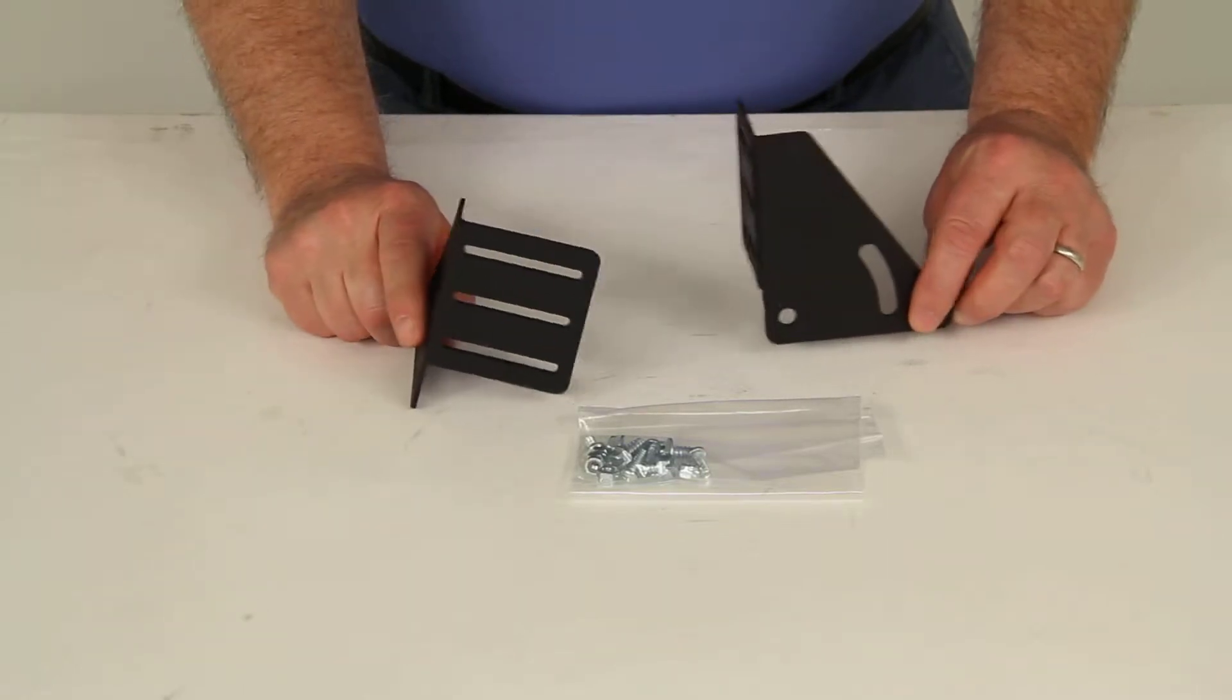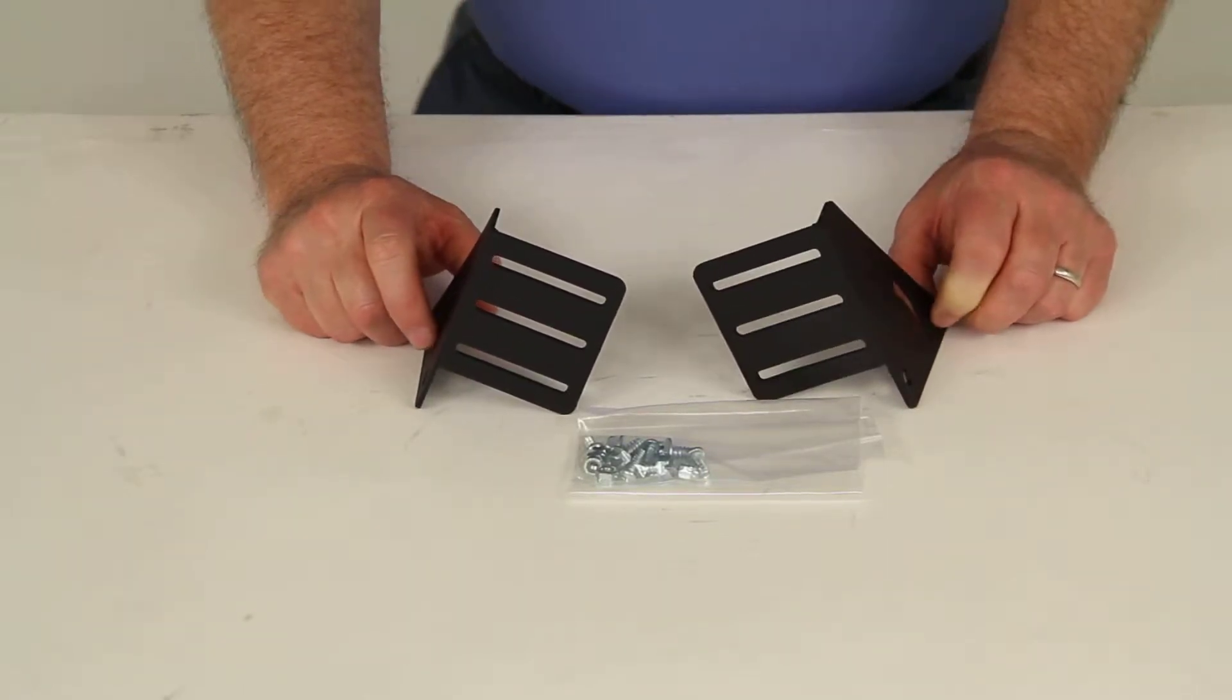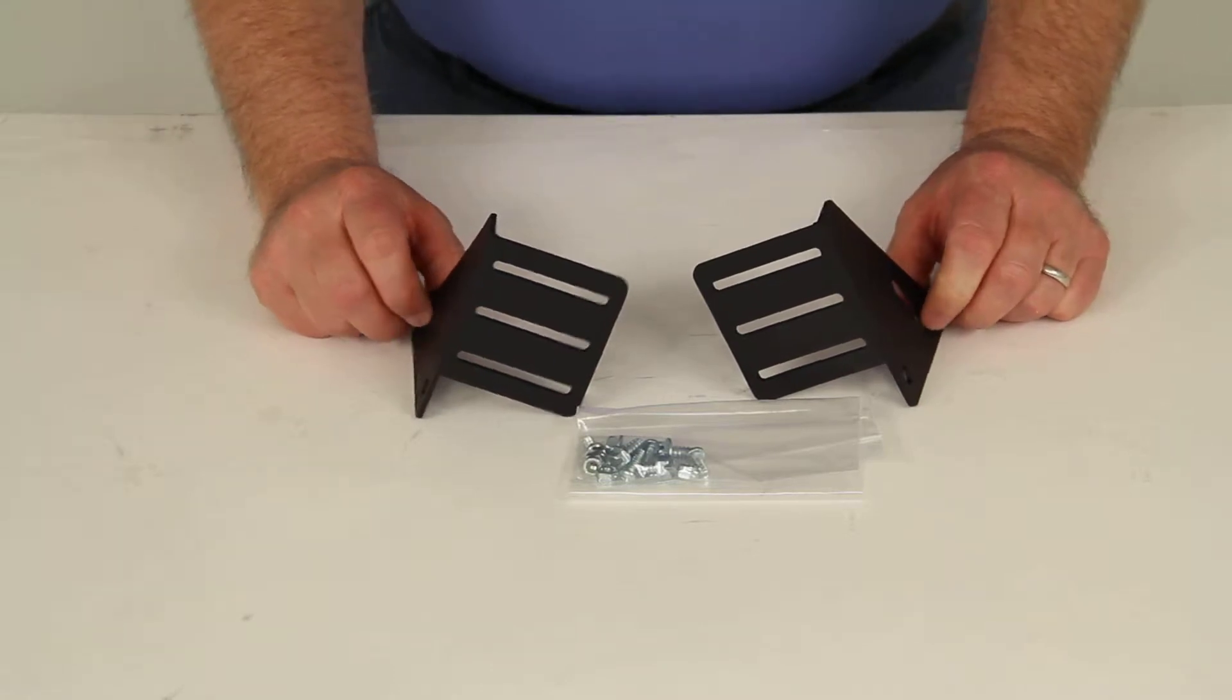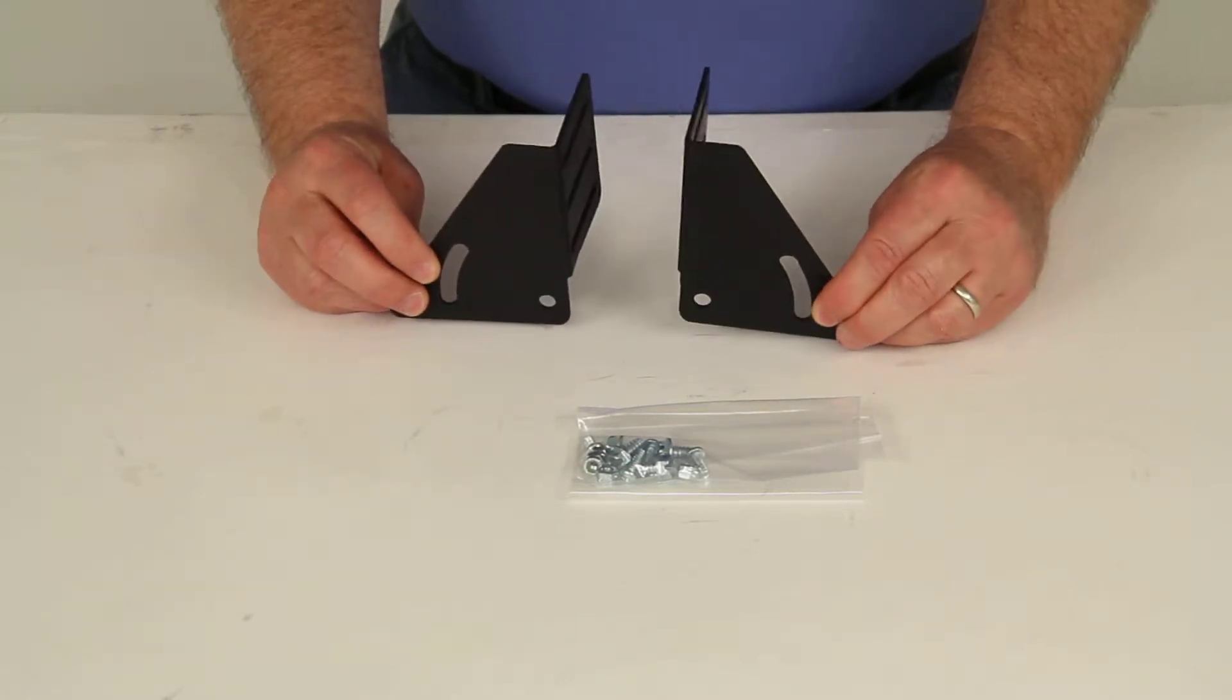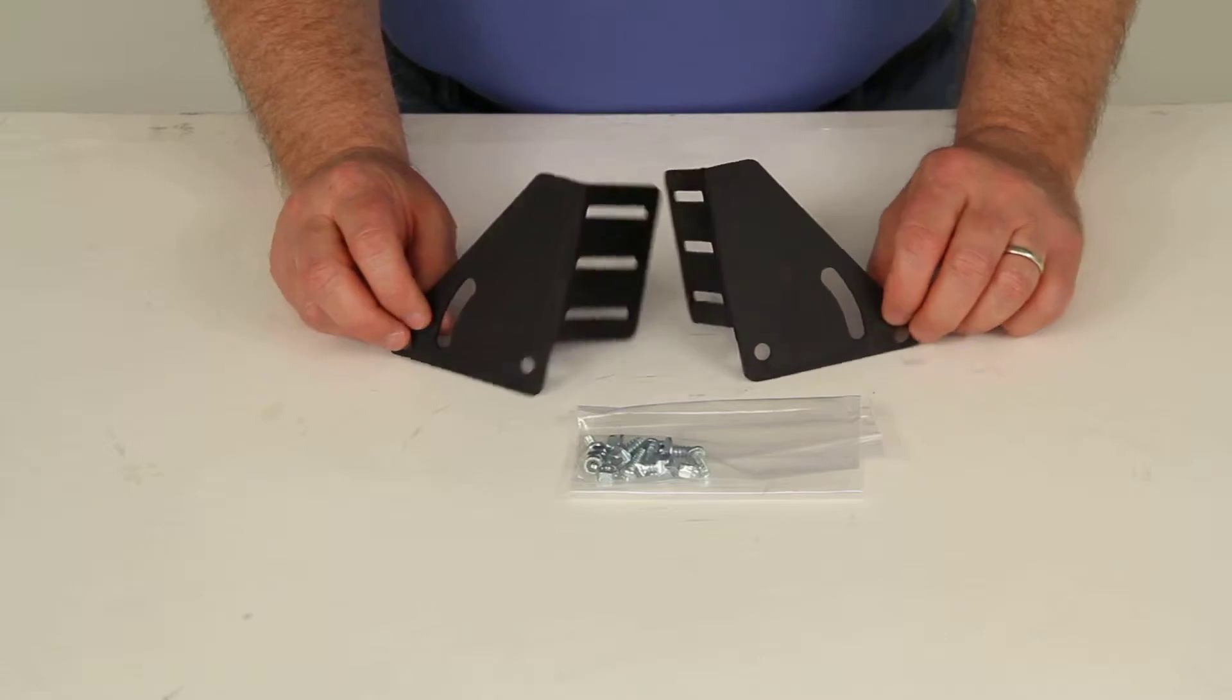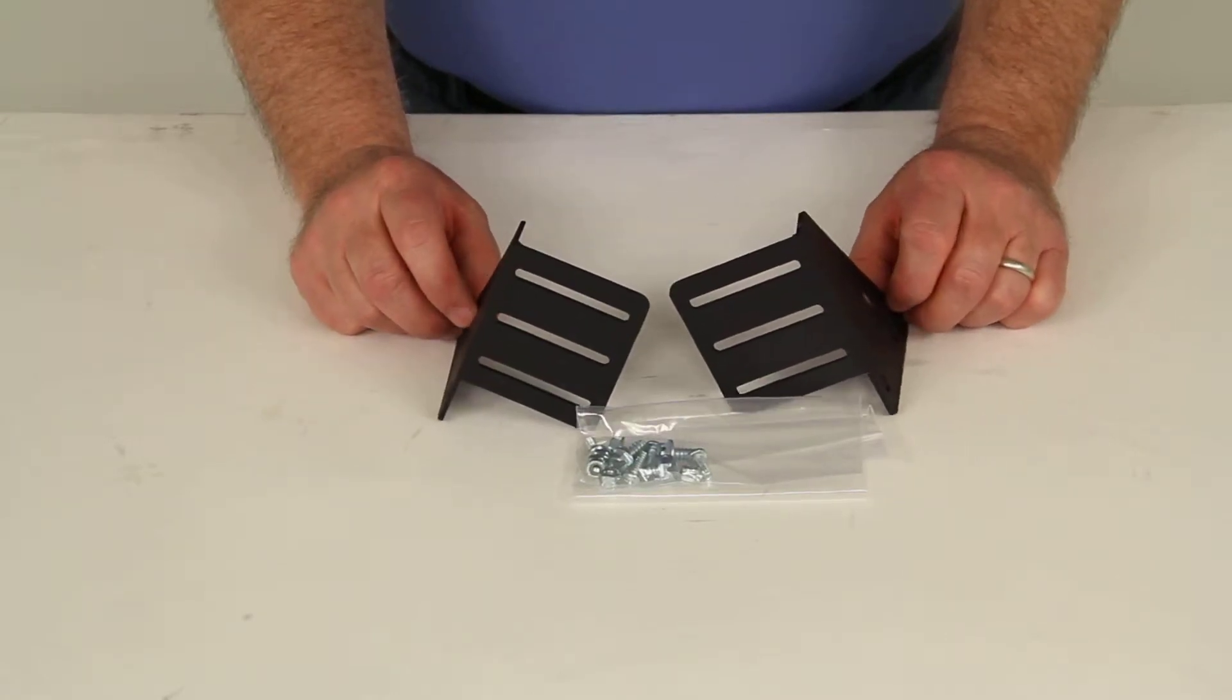Today we're going to review part number WM6700BK. These are the fifth wheel pinbox mounting brackets for the Wheelmasters Levelmaster Trailer Bubble Level.